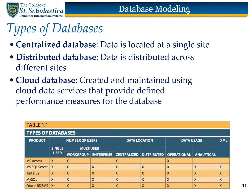Location may also be used to classify the database. A database that supports data located at a single site is called a centralized database, while a distributed database is decentralized and distributed across different sites. Both types require a well-defined infrastructure — hardware, operating systems, network technologies, etc. — typically owned and maintained by the organization. In recent years, the use of cloud databases has been growing in popularity. Cloud databases such as Microsoft Azure or Amazon AWS are created and maintained using cloud data services that provide defined performance measures for the database.